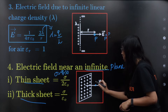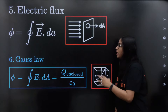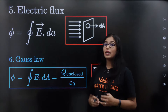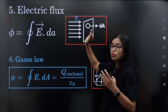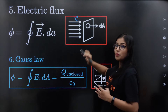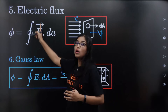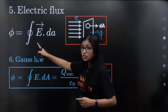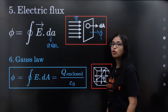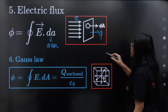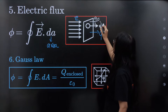Electric flux — the total electric field through a particular area. Electric flux is equal to the closed integral of electric field into dA, where dA is the area element. The area vector is perpendicular to the surface at 90 degrees.